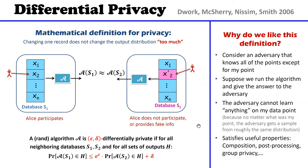So that's the definition of differential privacy. Why do we like it? It has a very intuitive interpretation for privacy. Consider an adversary that knows all of the rows in the database except for my row. We run our algorithm on the database, get an outcome, and give this outcome to the adversary. From the adversary's point of view, he cannot learn basically anything about my row, because no matter what my row was, he would have seen a sample from roughly the same distribution.